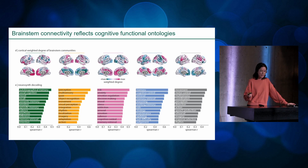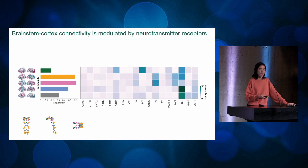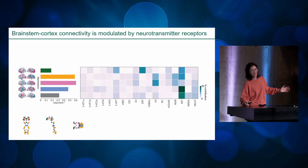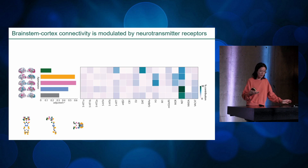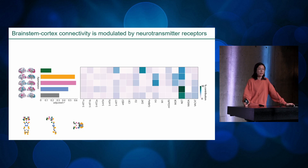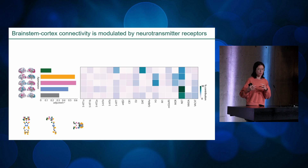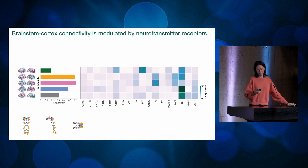I really wanted to understand why brainstem nuclei are connected to the cortex in these specific ways. An initial answer that makes sense is that it's probably due to receptor systems. We have receptors distributed throughout the cortex, and brainstem nuclei expressing specific neurotransmitters projecting out to the cortex. So if some nuclei are synthesizing a lot of serotonin, that's likely related to serotonin receptor distributions in the brain. The analysis shows a nice coupling between the receptor involved in the cortical pattern and the neurotransmitter synthesized in the brainstem nucleus.